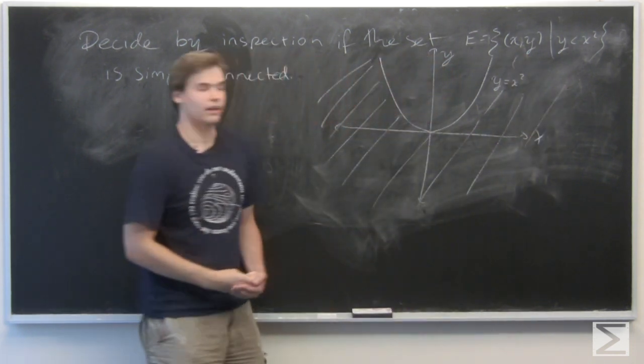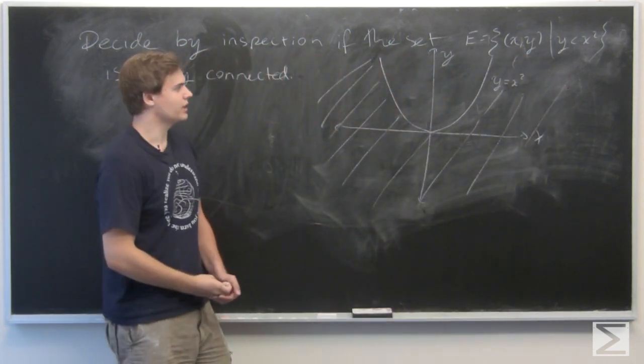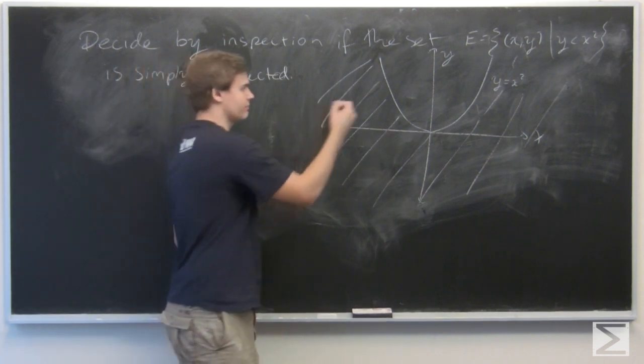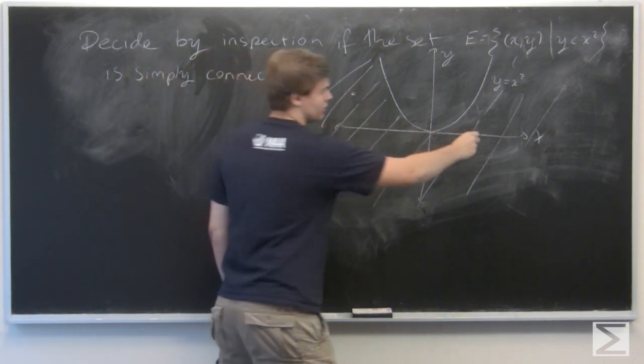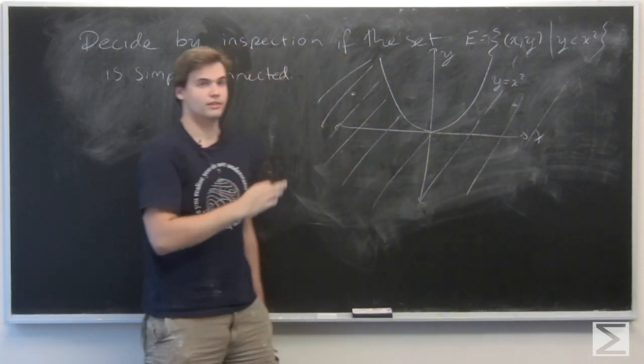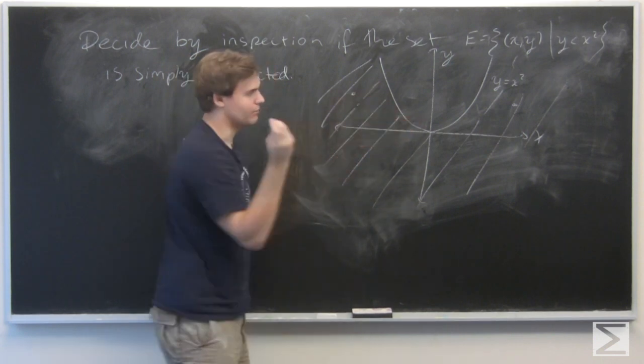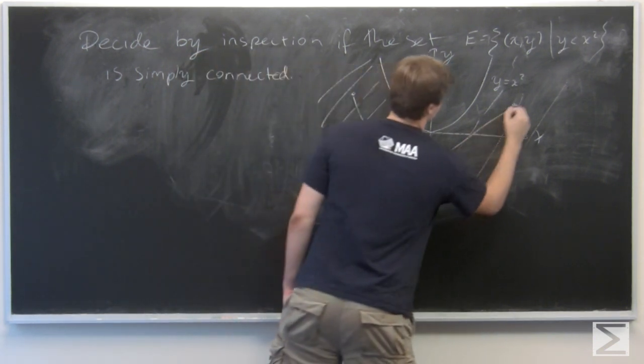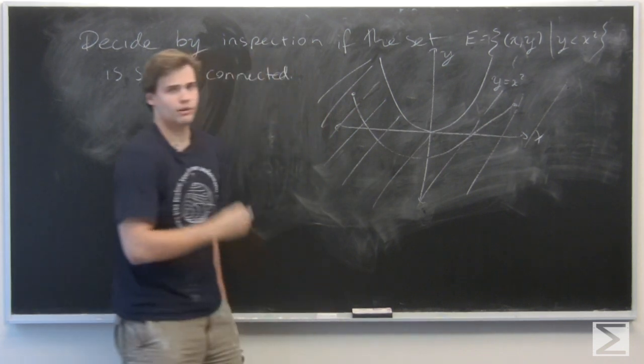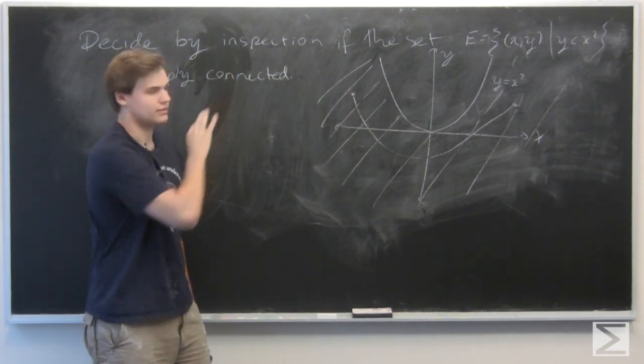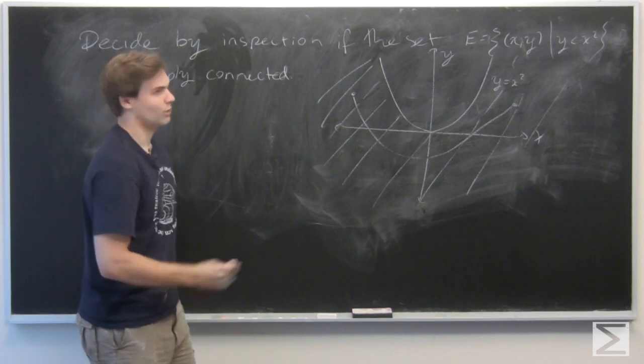So now we have that. So recall what the definition of simply connected meant. It meant that it's path connected. So given any two points, say P and Q somewhere else, there's always some continuous line segment connecting them. So for instance here, I'd pick two random points. I can always go up here. Likewise, there are no holes or anything like that. It's not disconnected. It's a very nice subset of R2, relatively speaking.